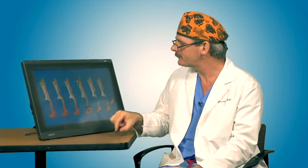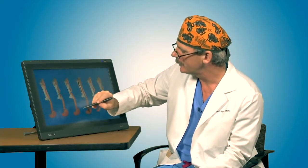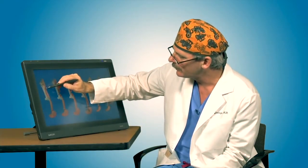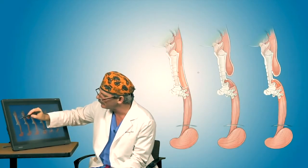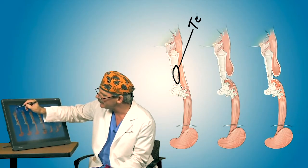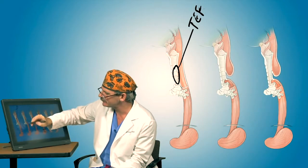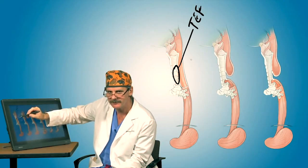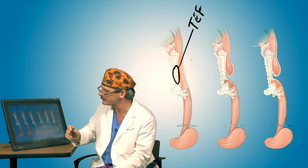So here we have various forms of esophageal atresia, or esophageal maldevelopment. We can start over here in the simplest form. Remember that common wall between the trachea and esophagus. Sometimes that doesn't form correctly, and a little hole forms, and we call that hole a TEF. That stands for trachea esophageal fistula. A fistula is just a hole or an abnormal connection.